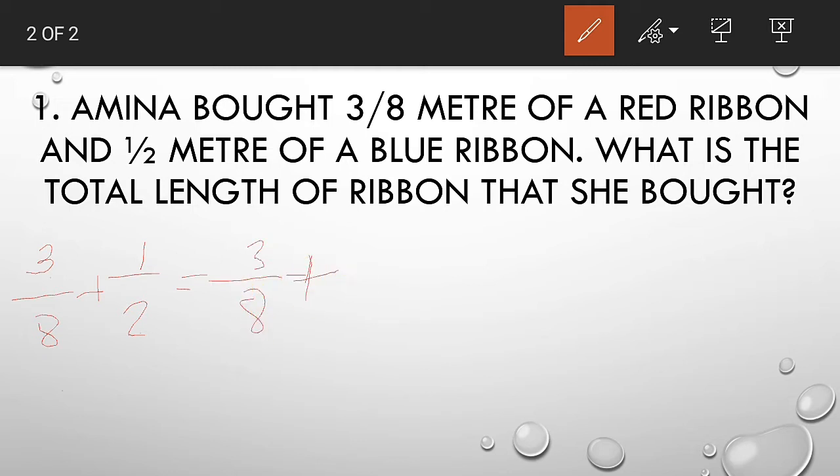Yaha hapar 2. Toh denominator 4. 4 multiply 2 is 8. Lekin toh numerator times - 1 multiply 4 is 4. Toh denominator same. So 3 plus 4 is 7 and denominator is 8. So the answer is 7/8. Okay?